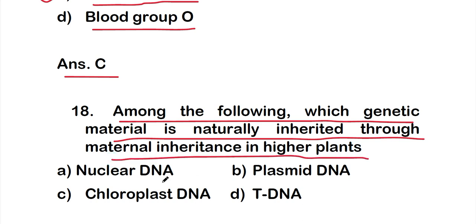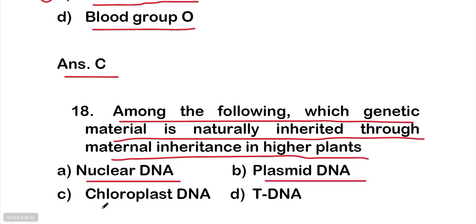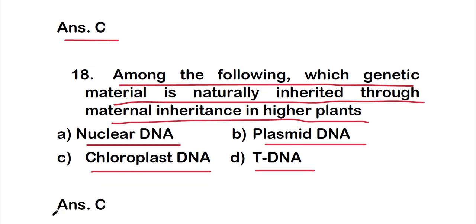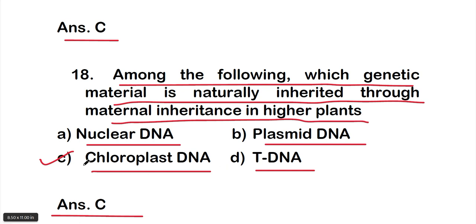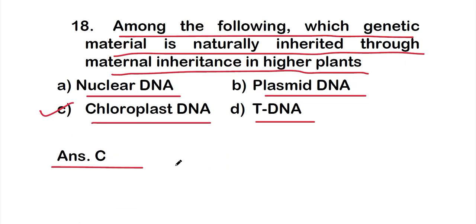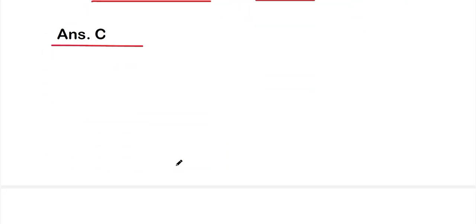Question eighteen: among the following, which genetic material is naturally inherited through maternal inheritance in higher plants? Options: A: nuclear DNA, B: plasmid DNA, C: chloroplast DNA, D: T-DNA. The right answer is option C, chloroplast DNA.